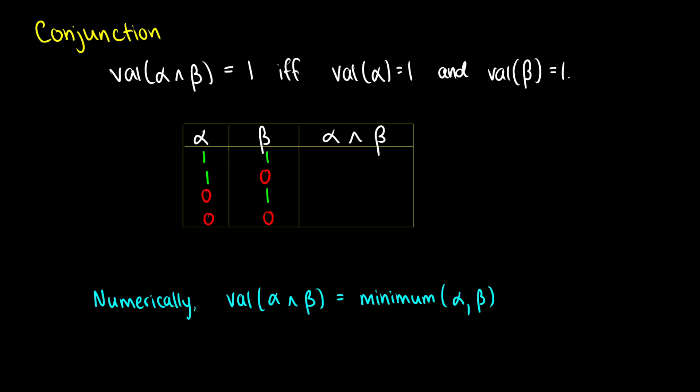Let's do the conjunction — this just corresponds to the word 'and.' If we have the value of alpha-and-beta, that is 1 if and only if the value of alpha is 1 and the value of beta is 1. Basically, A and B is true only if both A and B are true. So if alpha is 1 and beta is 1, alpha-and-beta is 1. But in the rest of the rows, if beta is false, alpha-and-beta is false; if alpha is false, alpha-and-beta is false; and if both are false, alpha-and-beta is false. This is like saying 'the scooter is red and the scooter is new' — because the scooter is red and new, we can say the scooter is red and new.